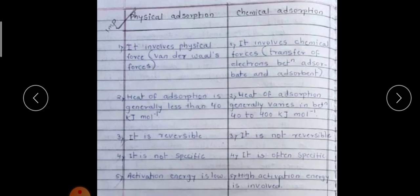Physical adsorption involves physical forces like van der Waals forces, whereas chemical adsorption involves chemical forces — that is, the transfer of electrons between the adsorbate and adsorbent. In physical adsorption, the heat of adsorption is generally less than 40 kJ/mol. In chemisorption, heat of adsorption lies between 40 to 200 kJ/mol. Physical adsorption is reversible; chemisorption is irreversible.